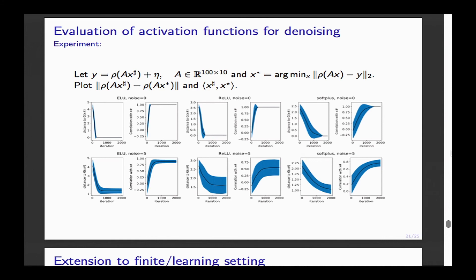Audience question: how does the noise factorize — does it depend on properties of the noise? My bound is a uniform bound using the norm of the noise. I don't assume the noise is random, but if you have more assumptions on the noise you could do a more refined analysis.